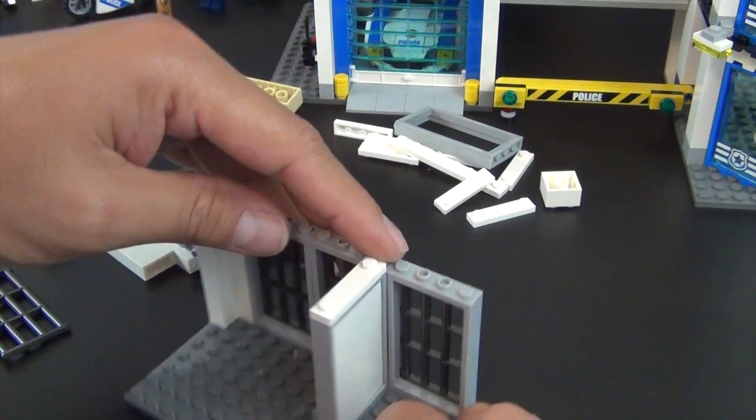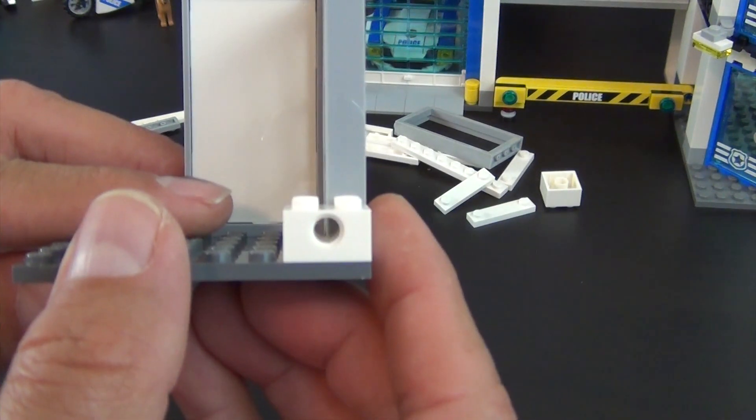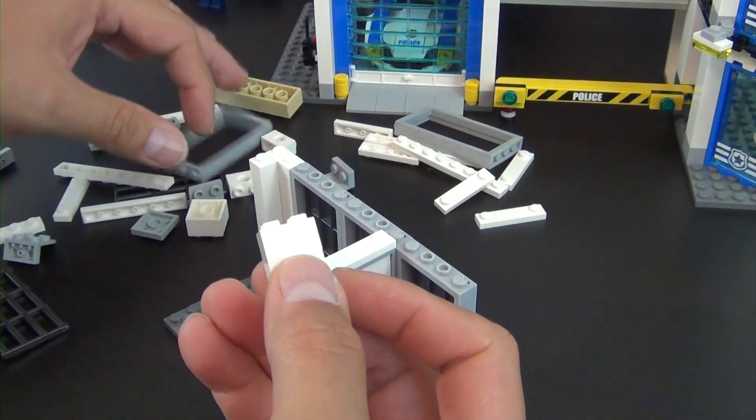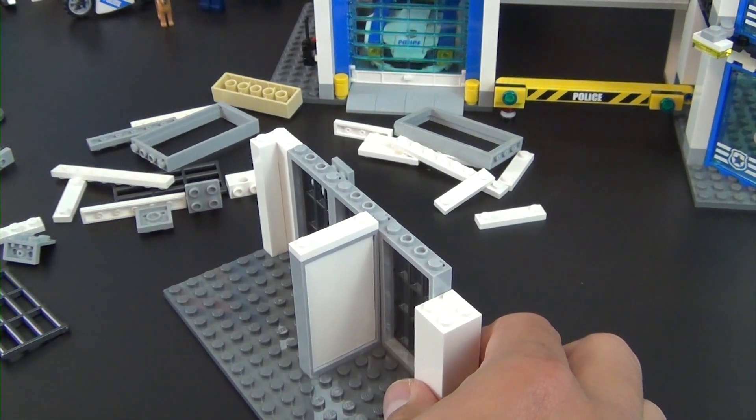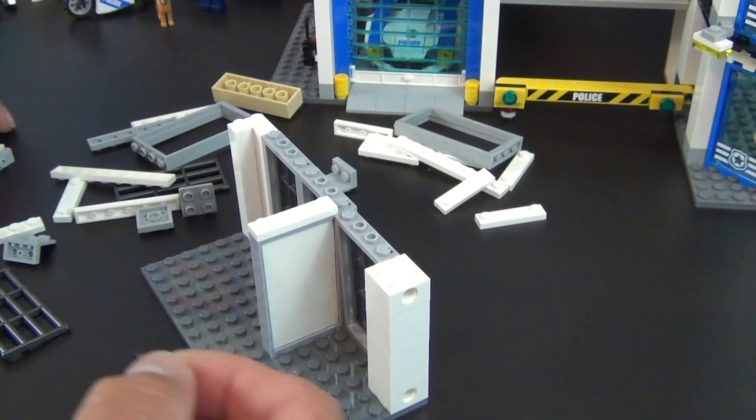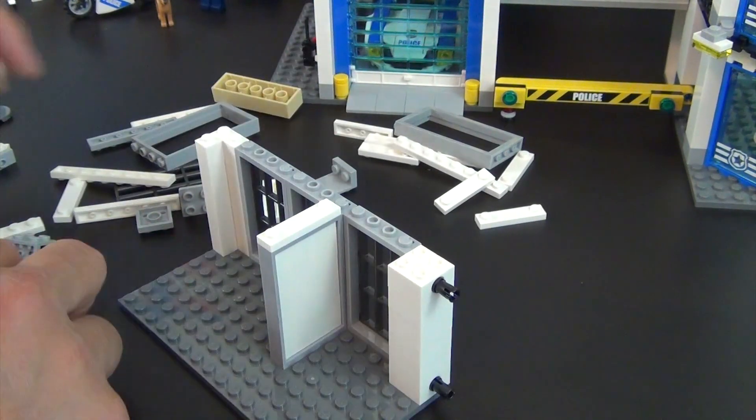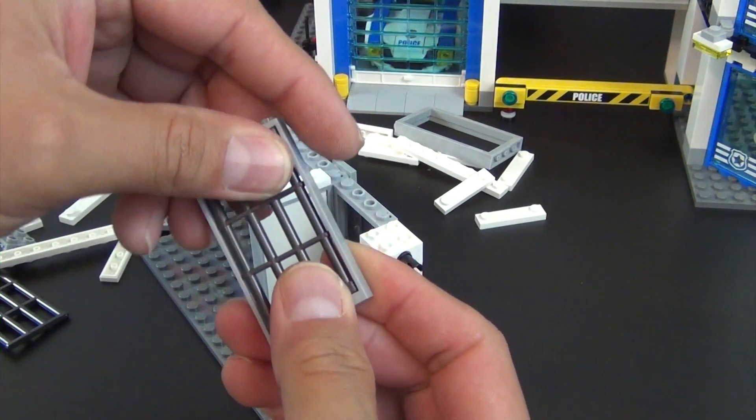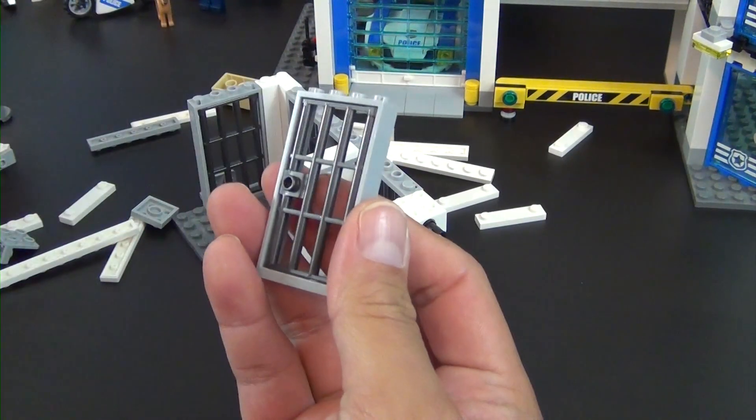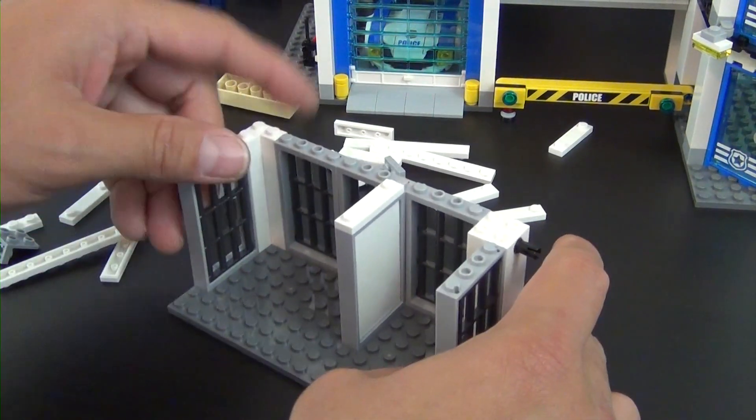Another frame and jail bar, so I guess this is the different cells. Two of the technic bricks that have a hole in them, and four two by two bricks. More technic bricks on top of those, and then we're going to put these friction pins inside both of those. Another frame with the jail bars, and another frame with the jail door. This one is the actual door that opens, whereas all these other bars do not open at all.